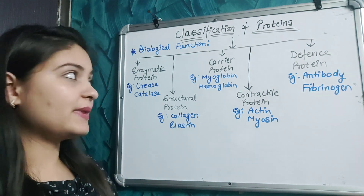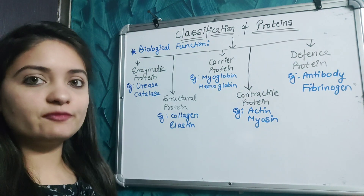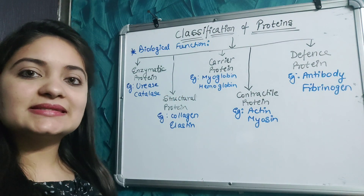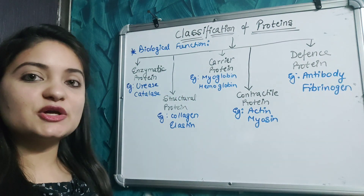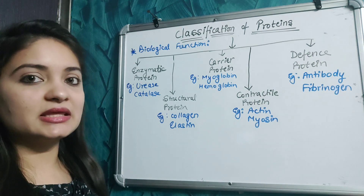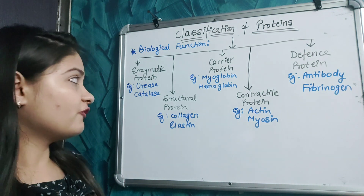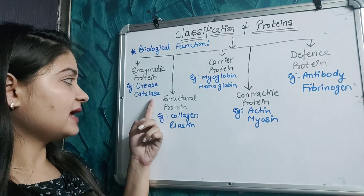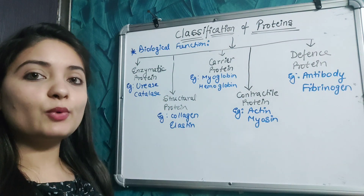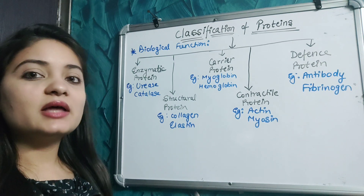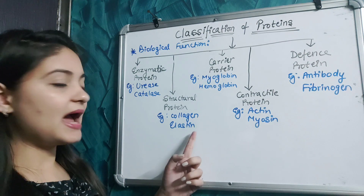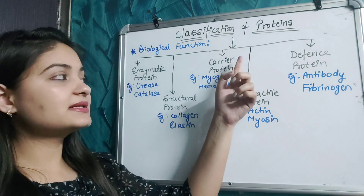Now let's discuss the classification based on the biological functions of protein. First, enzymatic proteins are highly specialized proteins that help in catalytic reactions in the body, for example urease and catalase. Second, structural proteins help in protecting the structures of the body, for example collagen and elastin.